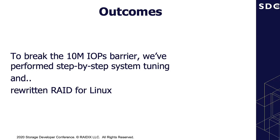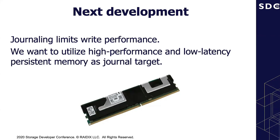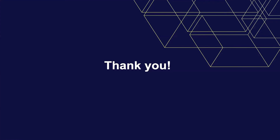To break the 10 million IOPS barrier, we performed step-by-step system tuning. We used NVMe drivers in hybrid polling mode, used new Linux I/O interfaces, and had to rewrite RAID for Linux. We know journaling limits write performance, and we want to use high-performance, low-latency persistent memory to store write journals. That's all — thank you for joining us and have a nice day. Goodbye.